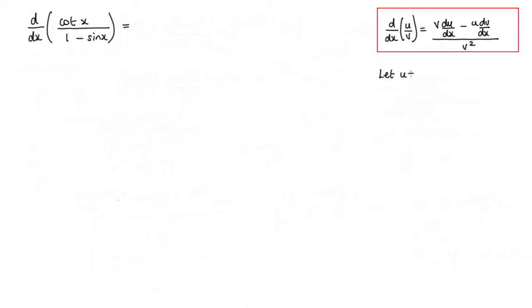So let u equal cot x. Now when we differentiate that, du by dx will be negative cosec squared x.